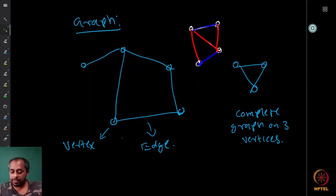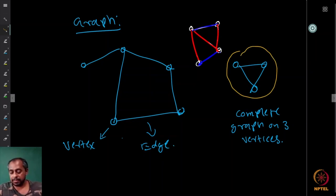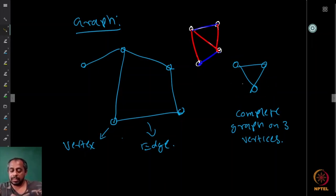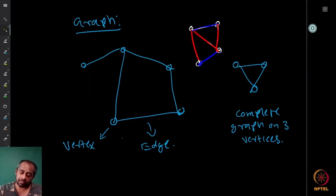There are many types of graphs. If every possible two-element subset of the vertex set is present as an edge, this is called a complete graph. For example, a complete graph on three vertices has all three possible edges present.